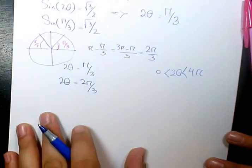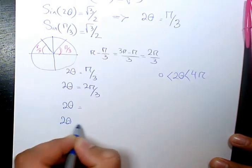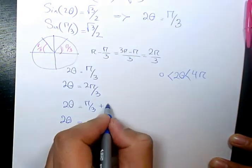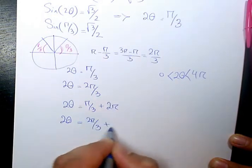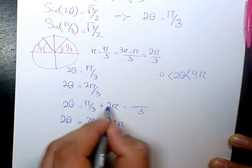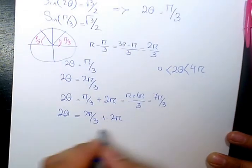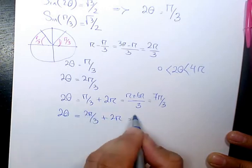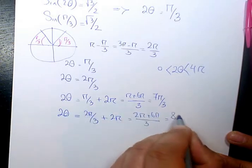So we need to have two more answers, which will be pi over 3 plus another cycle, which is 2 pi, and 2 pi over 3 plus 2 pi. So when you do the common denominator, it's going to be pi plus 6 pi, which is going to be 7 pi over 3. And here we have 2 pi plus 6 pi over 3, which is going to be 8 pi over 3.